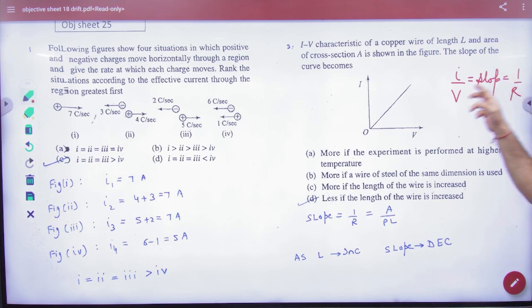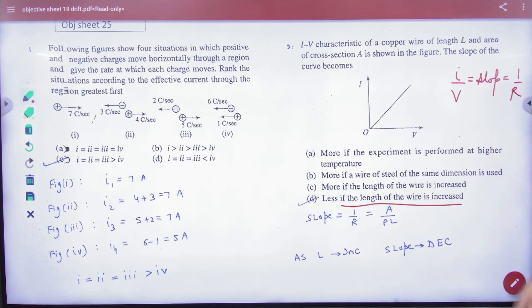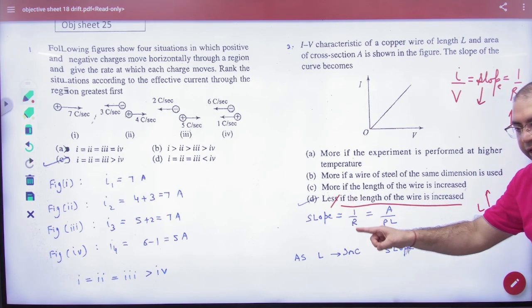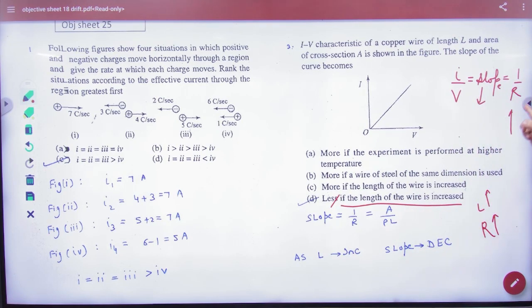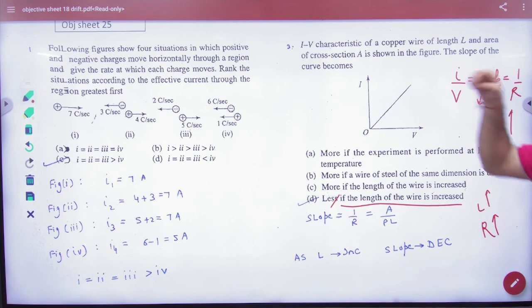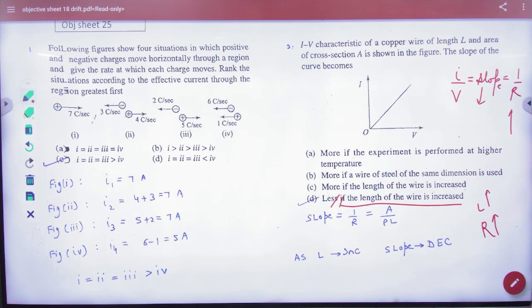So the question is slope of the curve becomes less if length of the wire is increased. If length increase then resistance will also increase. If resistance will increase then slope will decrease. That's what they are saying. Slope will less. How will it be if you will increase the length? So D option is coming.